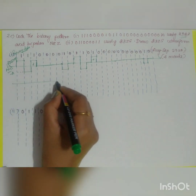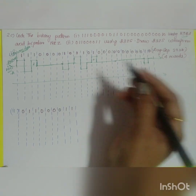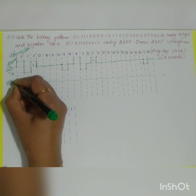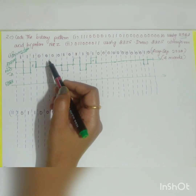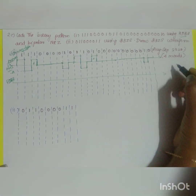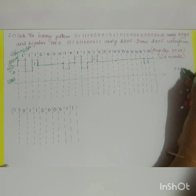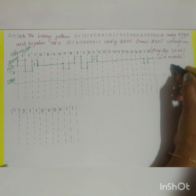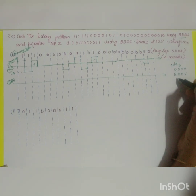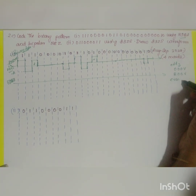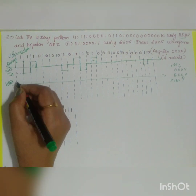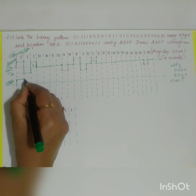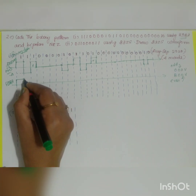What is HDB3 coding? In HDB3 code, consecutive four zeros will be replaced by either 000V or B00V. For an odd number of ones since the last violation, you replace with 000V, and for an even number, you replace with B00V. We start with normal bipolar encoding.